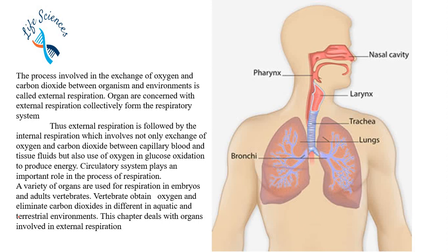A variety of organs are used for respiration in embryo and adult. Vertebrates obtain oxygen and eliminate carbon dioxide in aquatic and terrestrial environments. Because the environment is different, their respiratory organs will also differ. This chapter deals with the comparative anatomy of the respiratory system, focusing on the organs involved in external respiration.